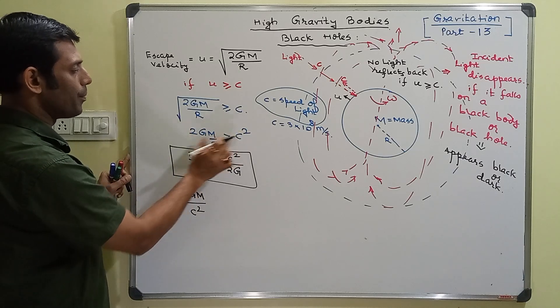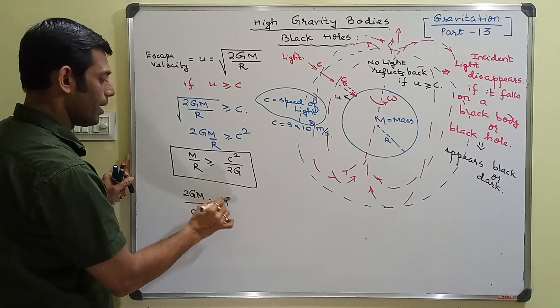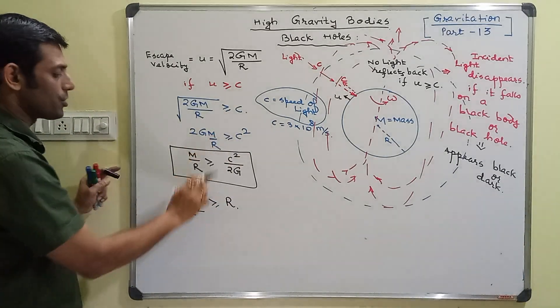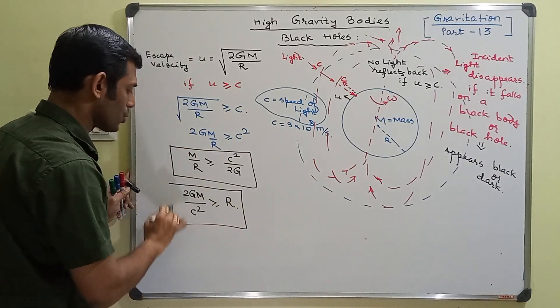Take 2GM by c square, and the radius of that body taken here. 2GM by c square, if it is greater than or equal to the radius of the body.